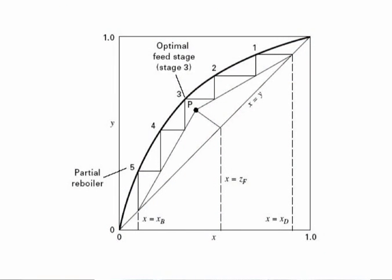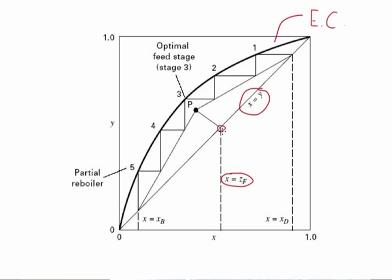On this plot, we have a completed McCabe-Thiele diagram for a distillation column. You can see the 45-degree line at x equals y across the center of the plot, the equilibrium curve — since it's the equilibrium curve for the light key, it's above the 45-degree line at all points — and then you have the Q line and the two operating lines. The Q line occurs at x equals z, and you can see the intersection point between the Q line and the 45-degree line, with the slope of the Q line being Q over 1 minus Q.